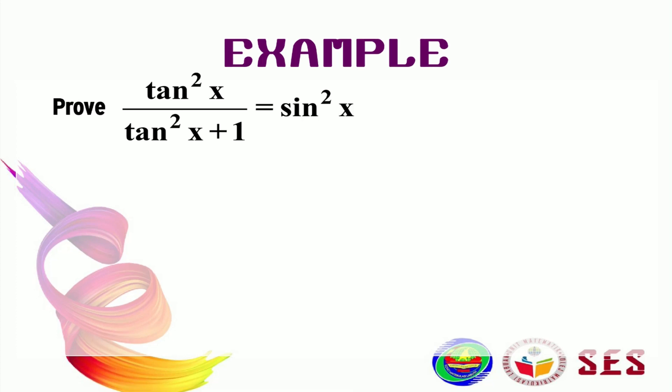The first step of proving is to choose a side first. So, should we choose the left-hand side or the right-hand side? As I said earlier, we want to choose the more complicated side, which in this case is the left-hand side. So, starting here, if you have no idea what to do here, remember to change everything to sine and cos.